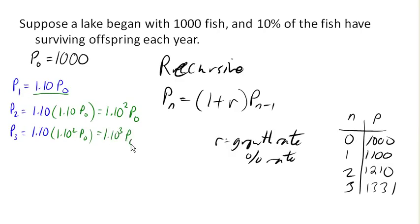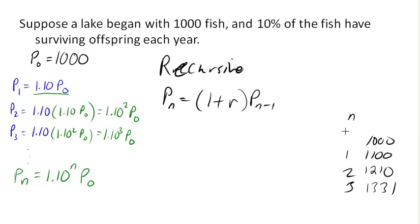And you can probably see the trend that's going to continue here. If I continue this down, in general, Pn is going to be 1.10 raised to the power of n times P0. And this is going to give me my explicit equation. So let's see if we can generalize off of this.